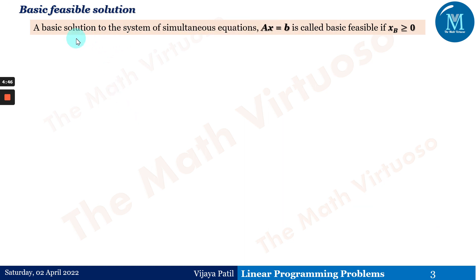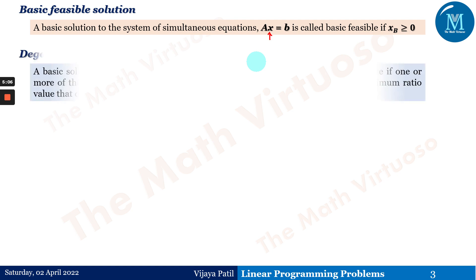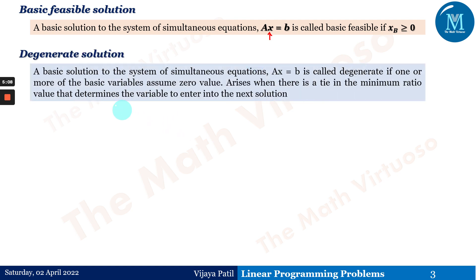The second term is basic feasible solution. A basic solution of the system of simultaneous equations Ax = b is called a basic feasible solution if x_B is greater than or equal to zero — that is, all basic variables are positive or zero, with no negative values allowed.